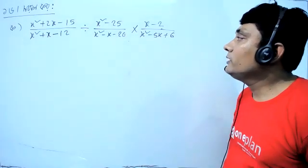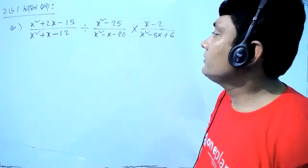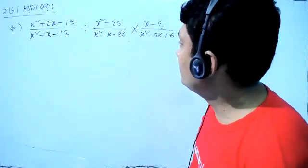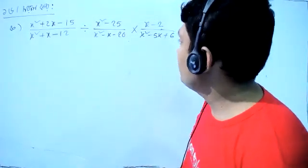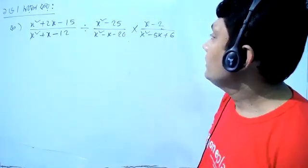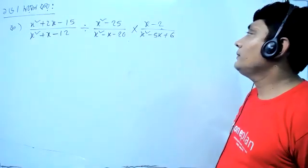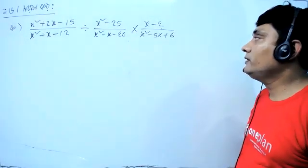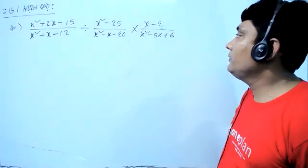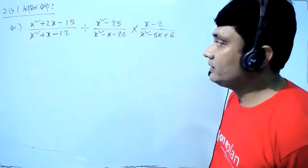x² - 25 by x² - x - 20, into x - 2 by x² - 5, x + 6. That means we have the following expression to simplify.